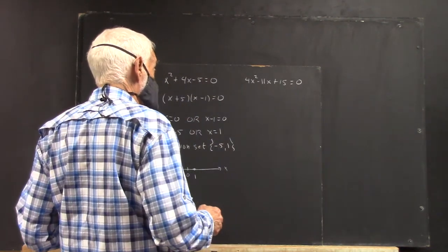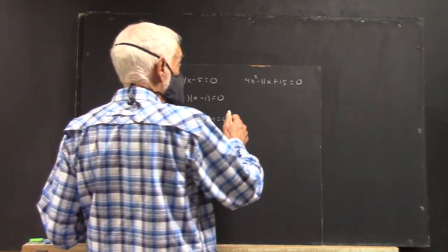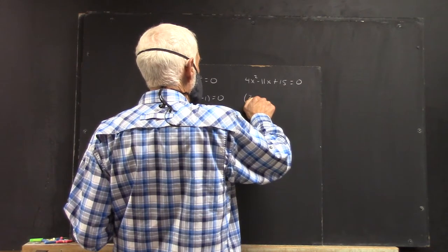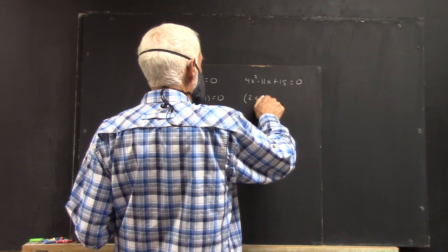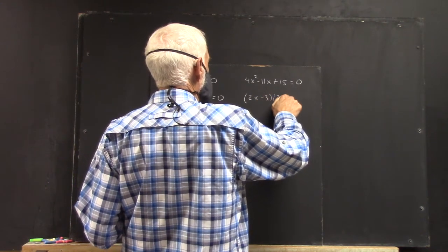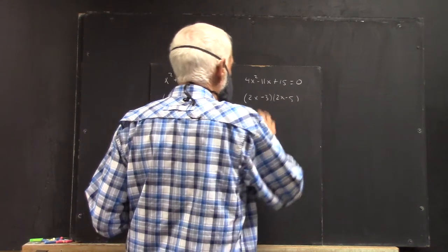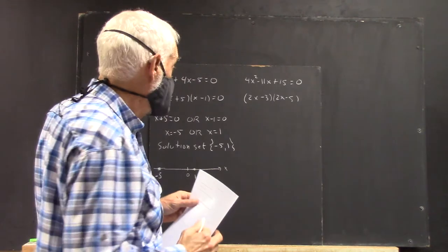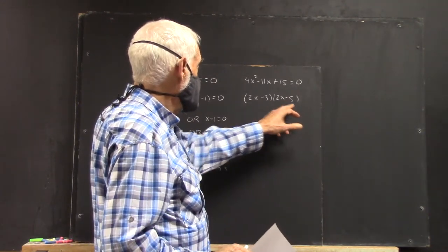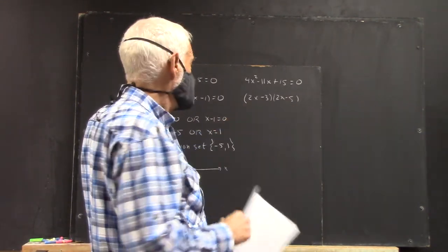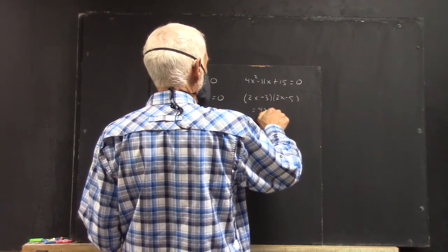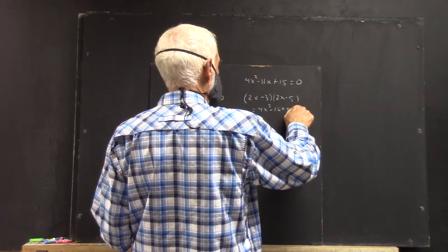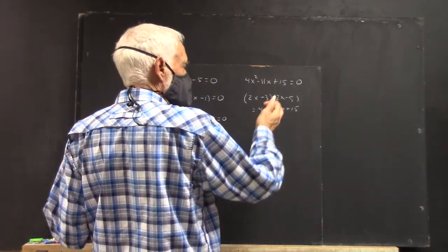Okay. Using the quadratic formula, it comes out pretty straightforward. But, okay, so. You could try 2x minus 3 times 2x minus 5. Okay. Well, you're going to have a negative 6x and a negative 10x. That would give you this. So, that doesn't work.